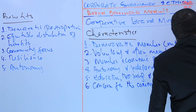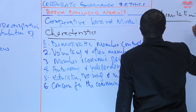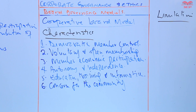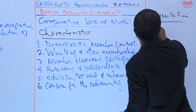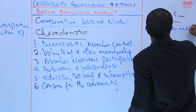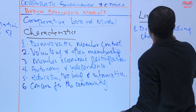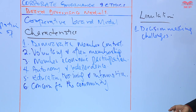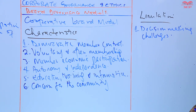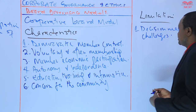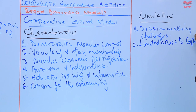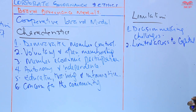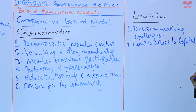What are the limitations of cooperative board models? The first limitation is decision making challenges. Democratic decision making can be slow and cumbersome, especially in larger cooperatives with diverse memberships, leading to potential delays and conflicts. The second limitation is limited access to capital — cooperatives may face challenges in raising capital due to their unique structure and restrictions on external investment.